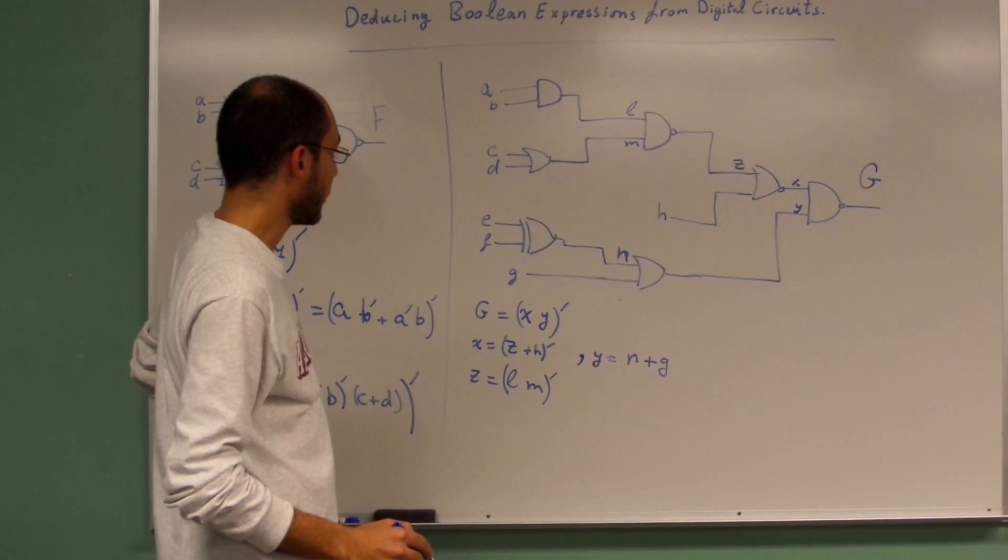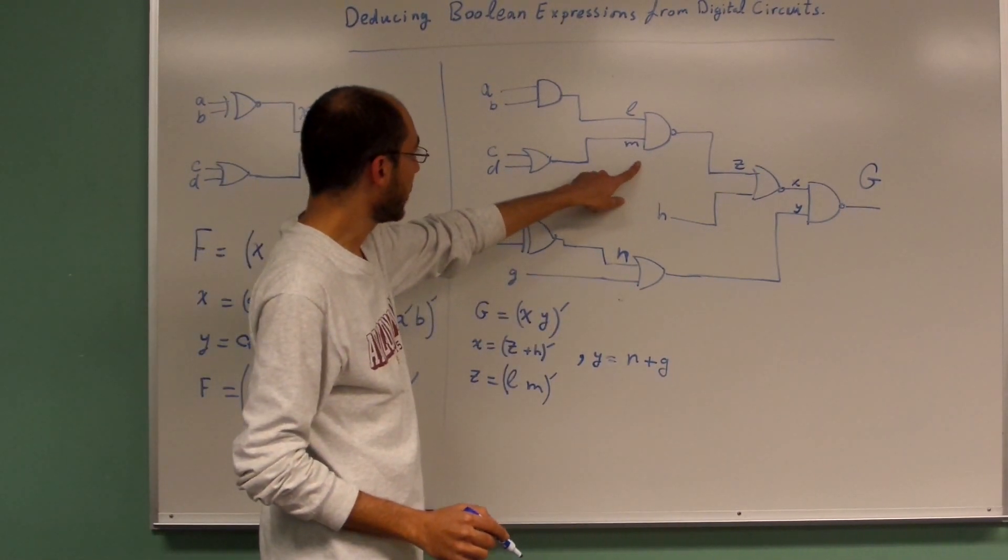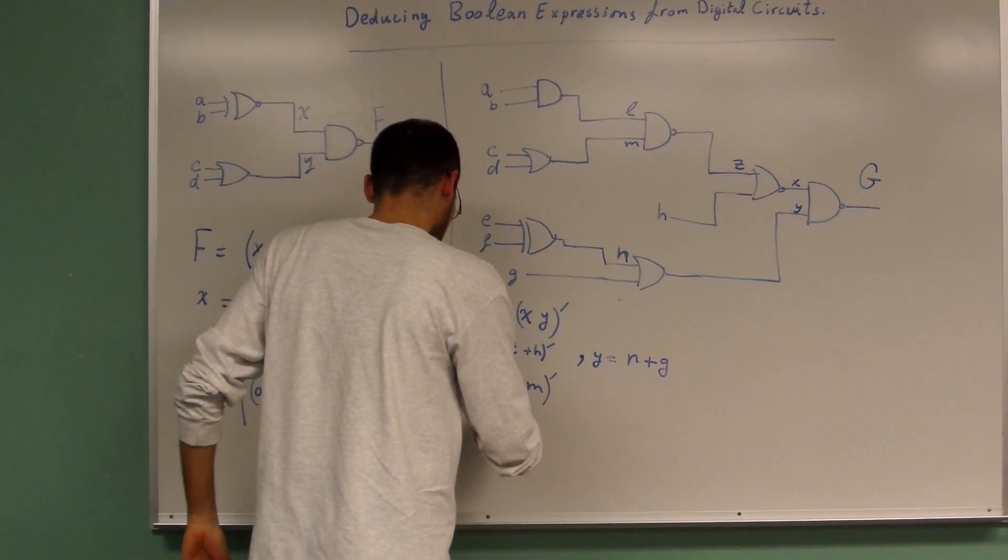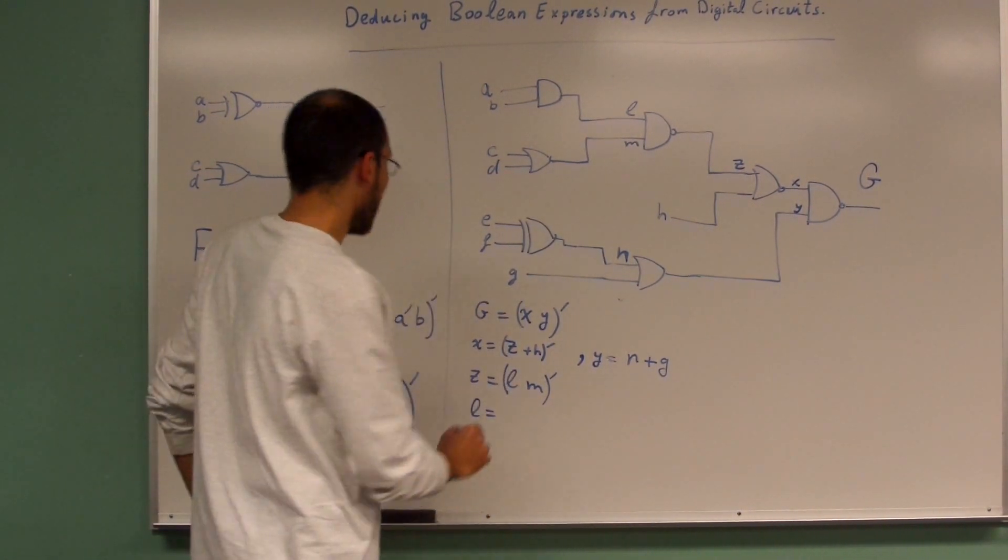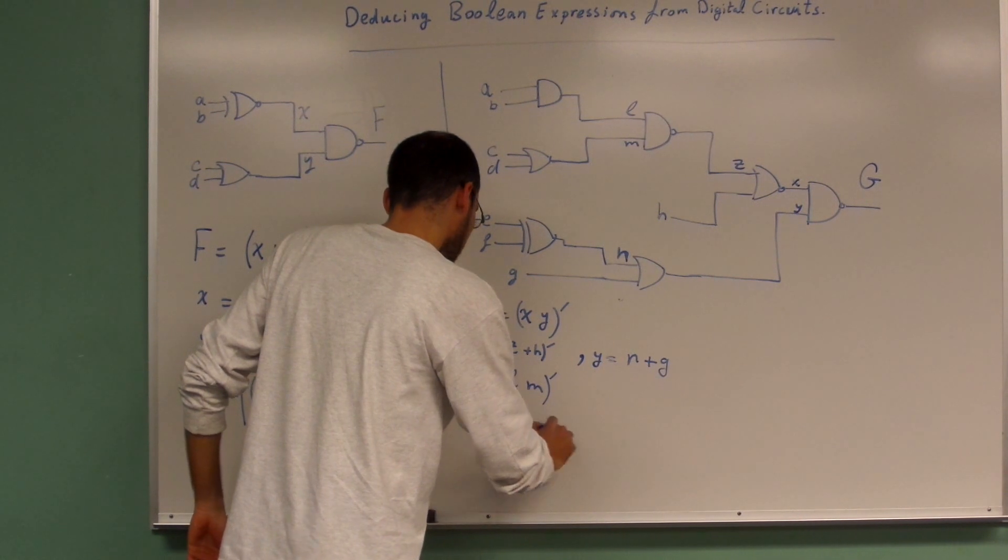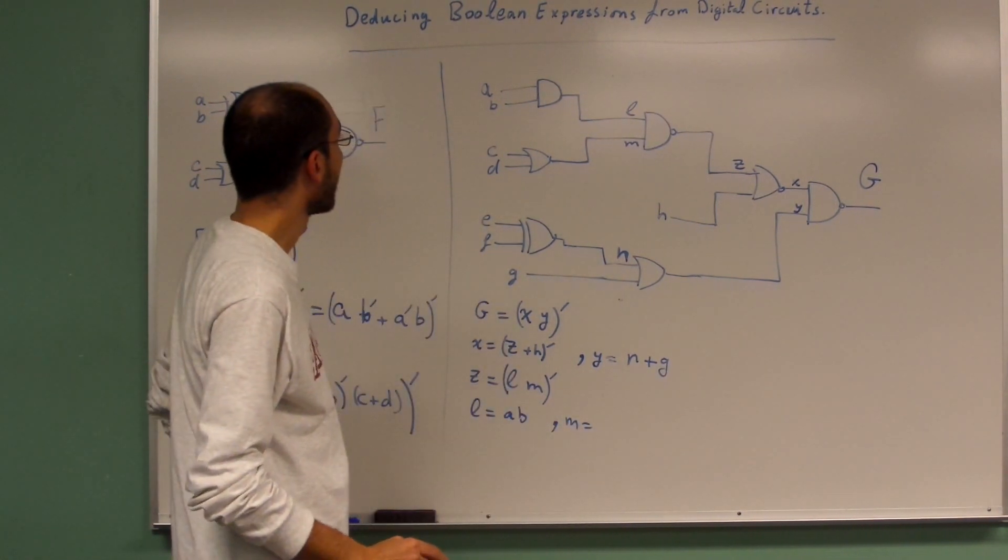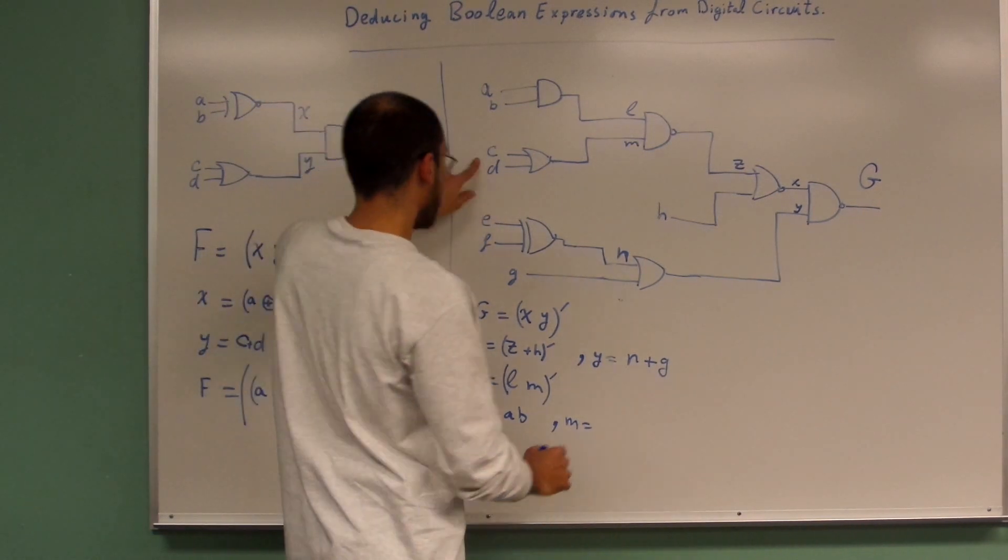Then we need to find the value of L and M. What is L? L equals A times B. M equals C plus D.